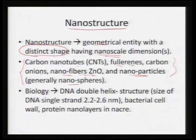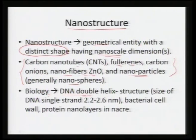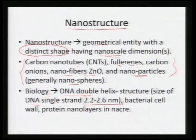This nano nanostructure terminology is not really new — it has existed in biology. For example, a DNA double helix strand has a single strand approximately 2.2 to 2.6 nanometers wide. This means nanostructures have been existing for a long time; it is just that we now know of them, can see them, characterize them, and tap them for engineering applications.